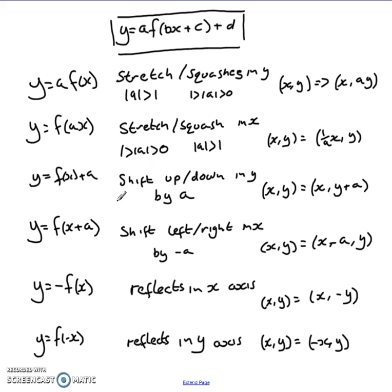Y equals f of x plus a shifts up or down in y by a value of a, shifting points from x, y to x comma y plus a. And y equals f of x plus a, where the a is in the bracket on the x, shifts it left or right in x but by negative a. If this was a positive value, it actually shifts it to the left. It follows the pattern that x, y becomes x minus a comma y.